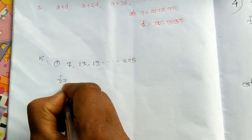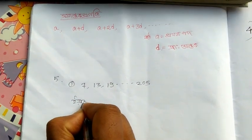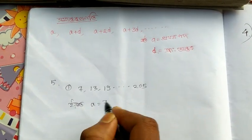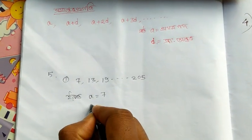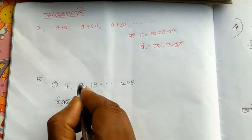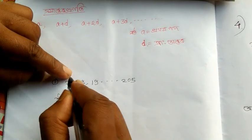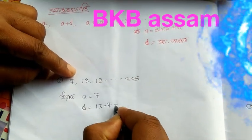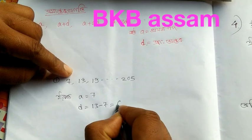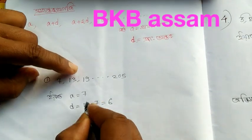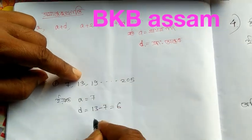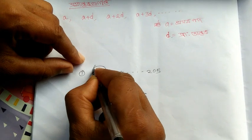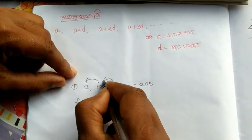13 minus 7 equals 6. Our next question: 19 minus 13 equals 6. So d equals 6 and a equals 7. Our last term is 205.